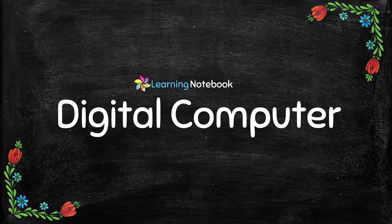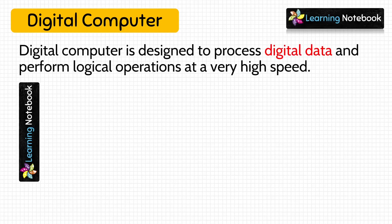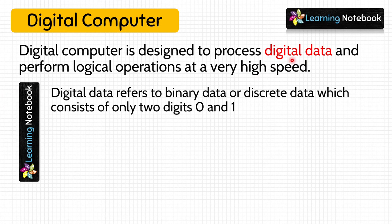Next type of computer on the basis of mechanism is digital computer. A digital computer is designed to process digital data and perform logical operations at a very high speed. Digital data refers to binary data or discrete data — the terms digital data, binary data, and discrete data are the same and are used to refer to digital computers only. Such data consists of only two digits: 0 and 1. No other value is accepted.